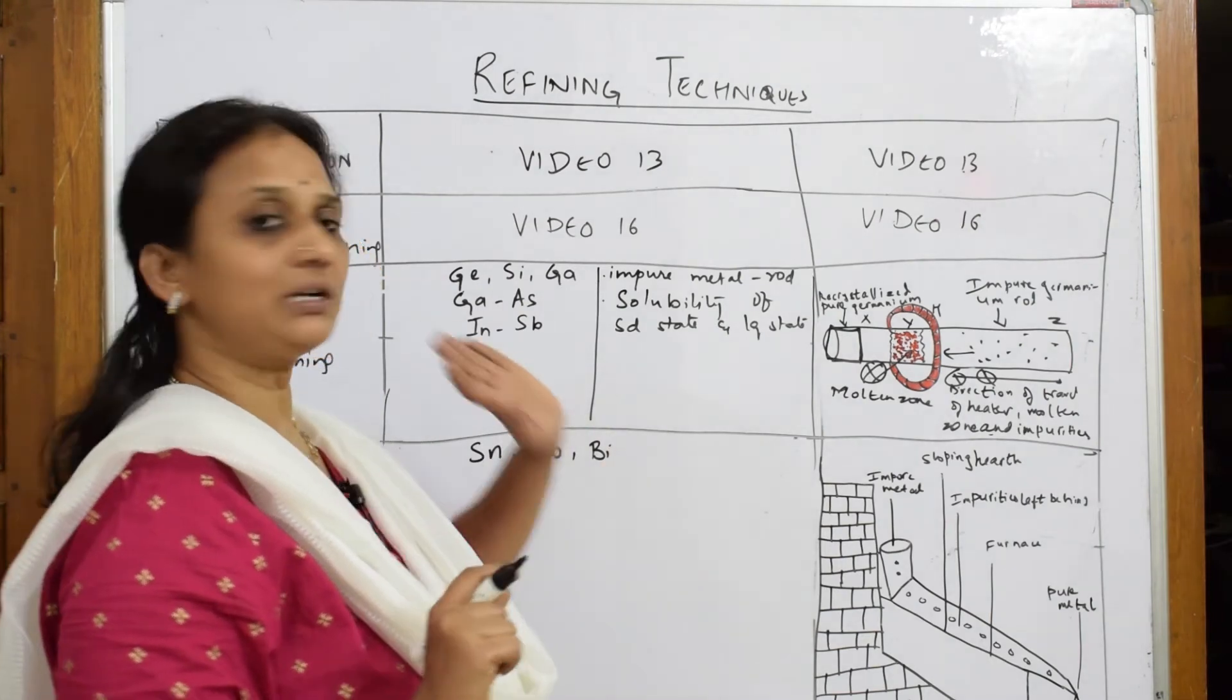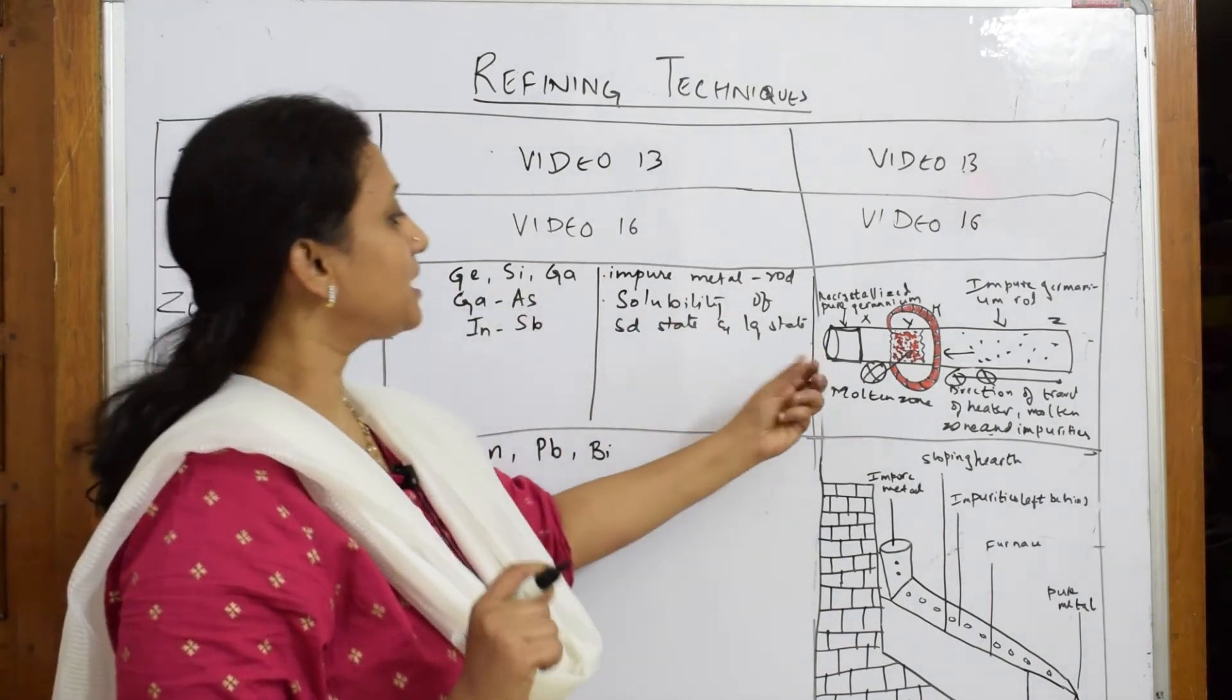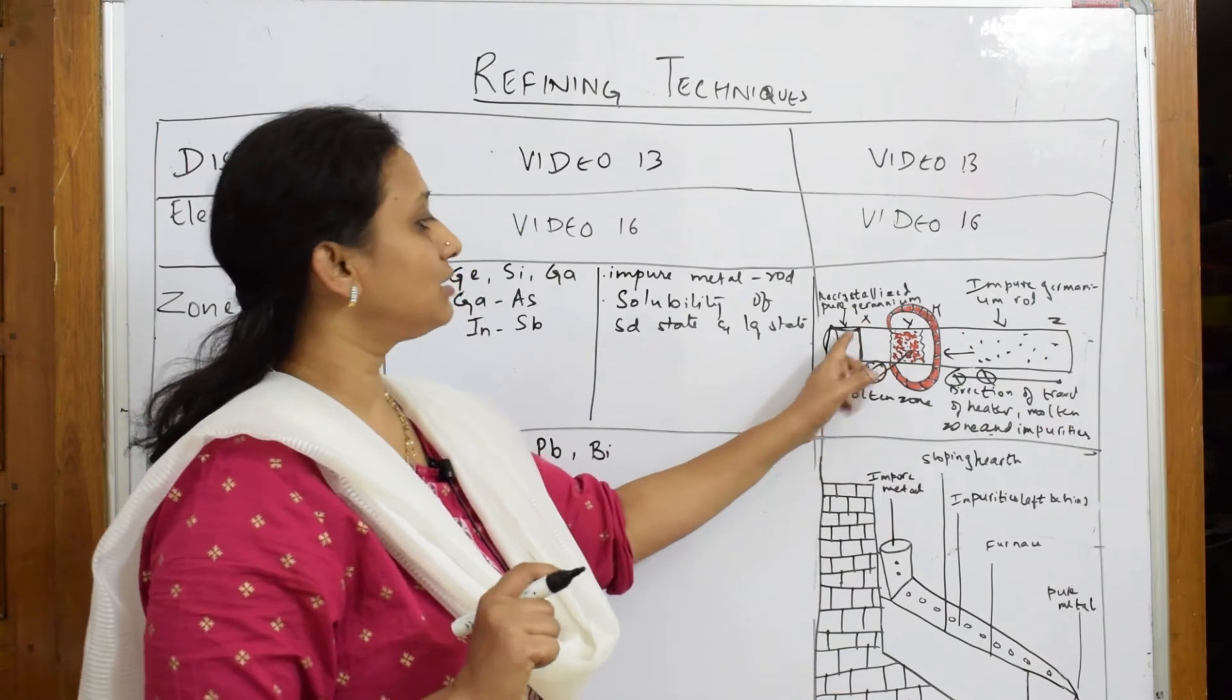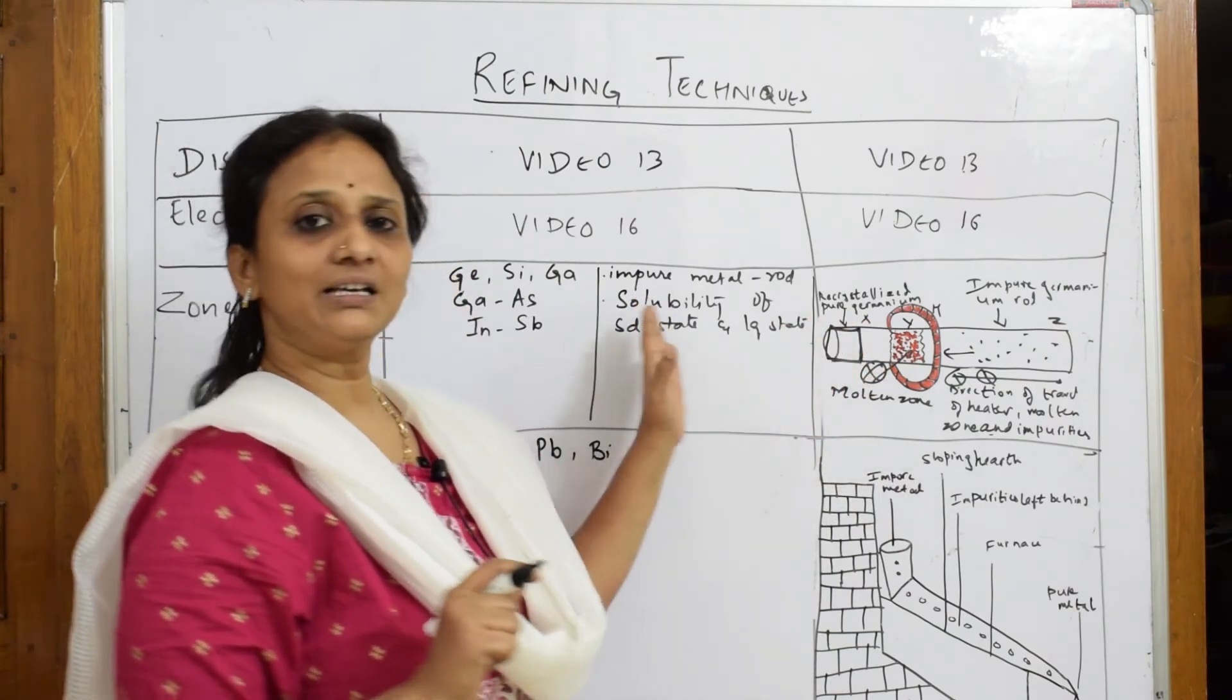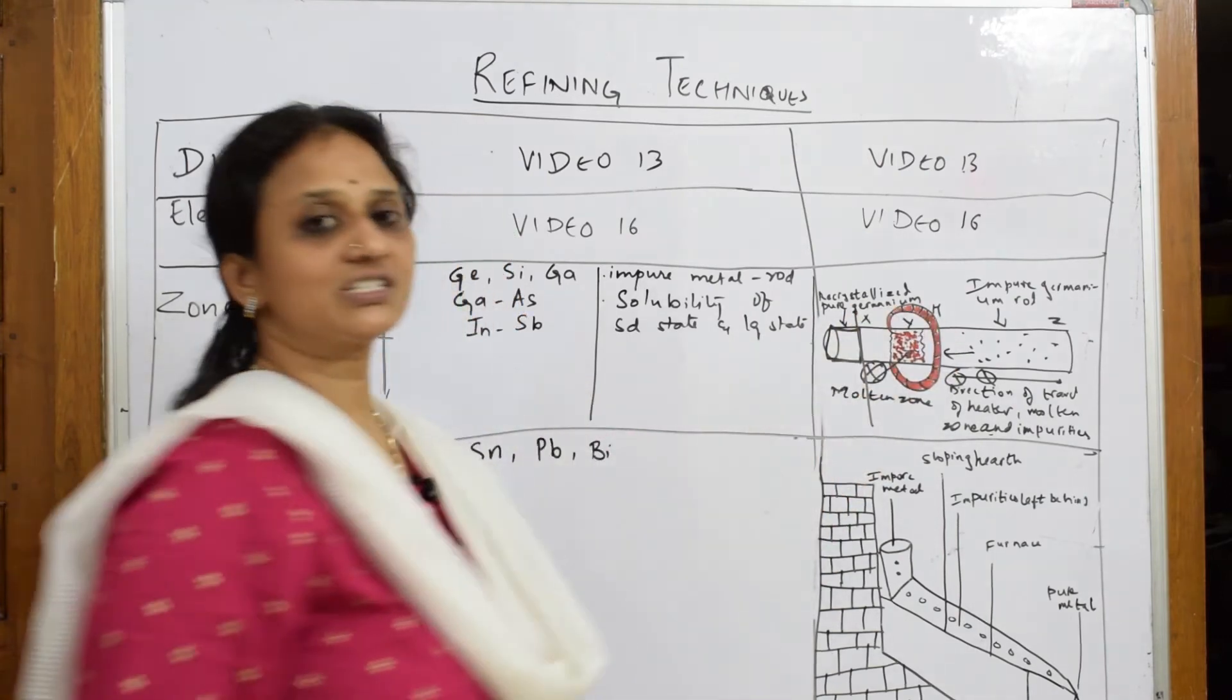The concept is the solubility of the impurity and the molten metal. Impurities are on one side of the rod and the pure metal gets recrystallized on one side. This part is cut in the zone - it's called zone refining.